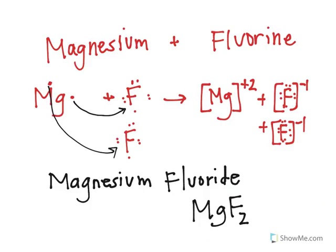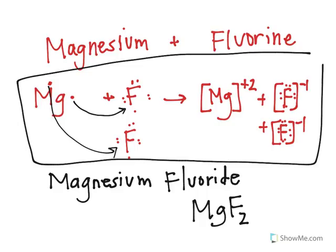So we've gone over how to draw ionic bonds using Lewis dot and these ion brackets. We've talked about how to name metals when they bond to nonmetals, and we've also talked about how to write the chemical formula.